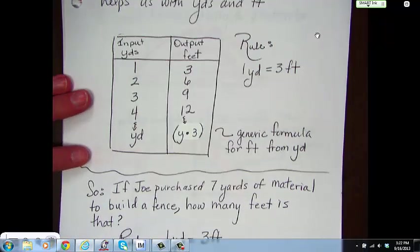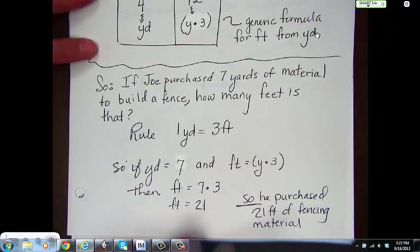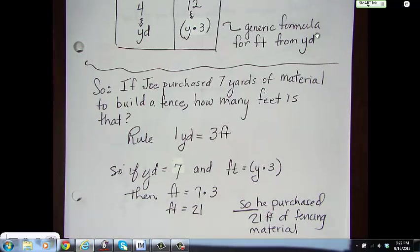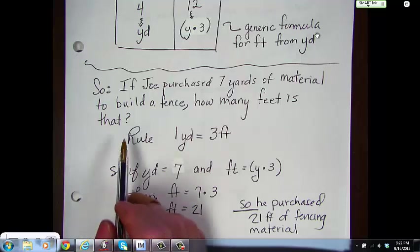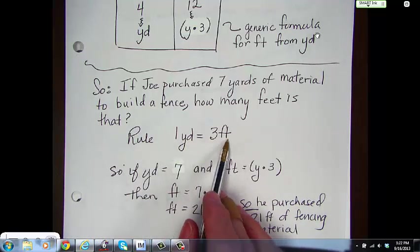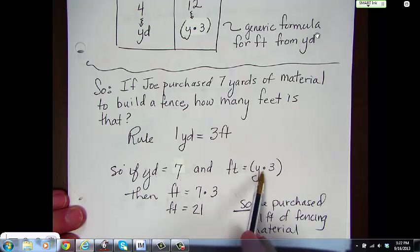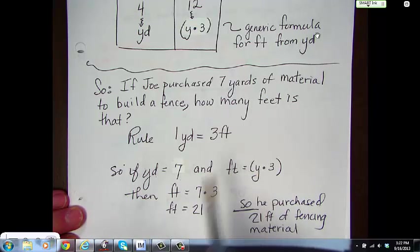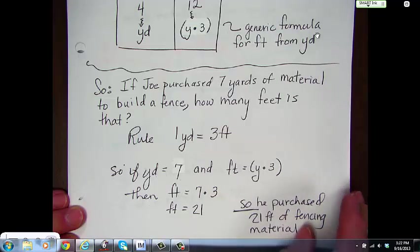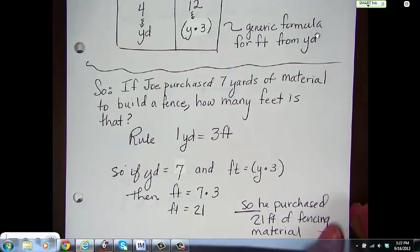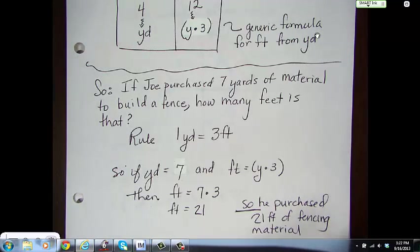So, if Joe purchased seven yards of material to build a fence, how many feet is that? Well, the rule is one yard to three feet. So, if yards equals seven and feet equal y times three, which is, of course, yards, then feet equals seven times three. So, he would have had to have purchased 21 feet of material to build that fence.